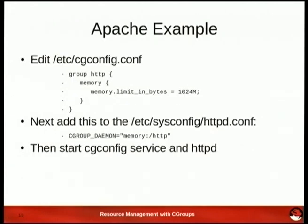You can actually just script this into the cgconfig script so that when you start up the background daemon, it already has a series of rules defined. Here we've defined a basic rule for Apache where its memory allocation will never exceed a gigabyte. In the case of Enterprise 6 and Fedora 14, the HTTP daemon has a sysconfig file. As soon as you add that line in and start the service, it's immediately Cgroups managed. On Red Hat's distributions, it's very easy to manage.